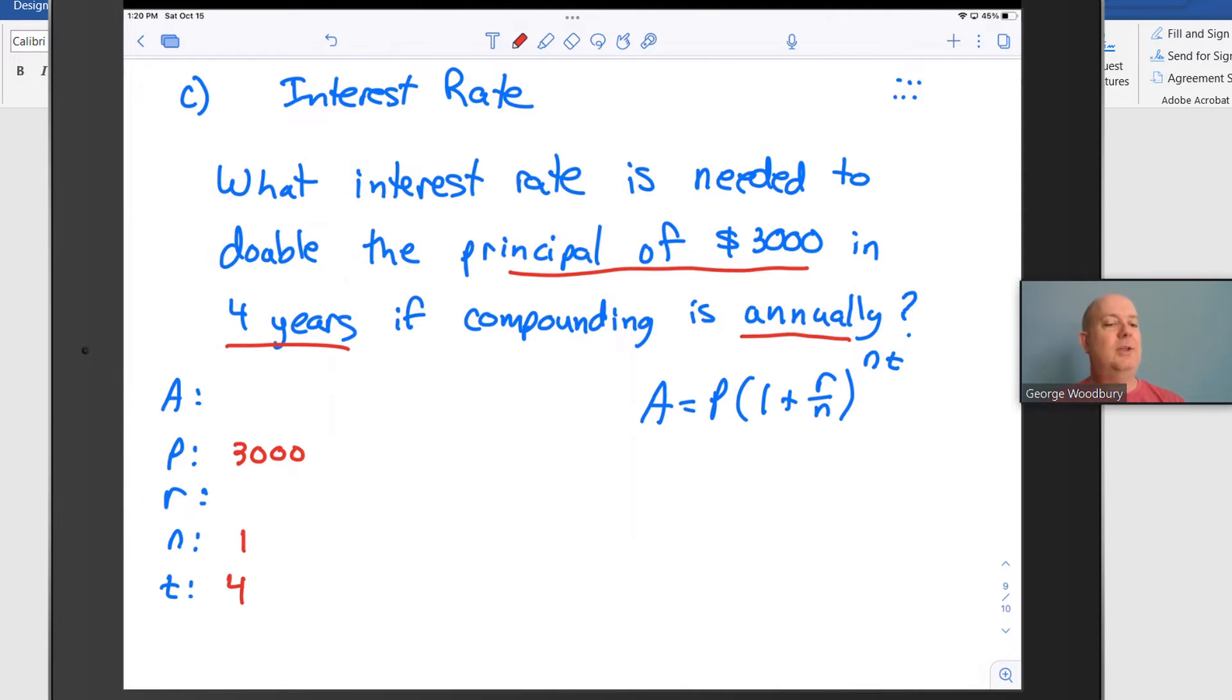Notice I still have two spaces missing though, and I know that I'm looking for the interest rate, so I need to have some kind of value for A. And it's saying that we want to double the principal, so that means the balance should be two times the principal. Two times 3,000 is 6,000.